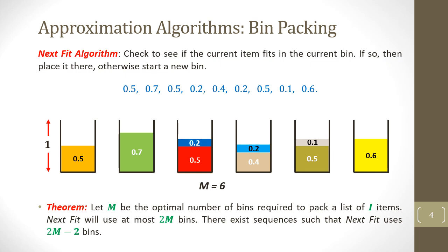Remember, the optimal solution was four bins. It is not an optimal solution, but with some performance ratio guarantee it solves the problem. There is a theorem that states: let m be the optimal number of bins required to pack a list of items. Next Fit will use at most 2m bins, and there exist sequences such that Next Fit uses 2m minus 2 bins. So the approximation ratio of Next Fit is 2.